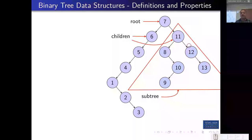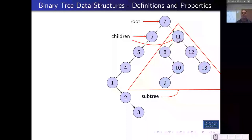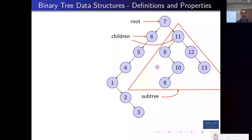We can talk about a subtree — any structure where you take some node that isn't the overall root and treat it as your new root. For example, we can talk about the subtree with 11 as the root, which contains just those nodes in that triangle. Similarly, 1 makes a subtree with just three nodes: 1, 2, and 3.